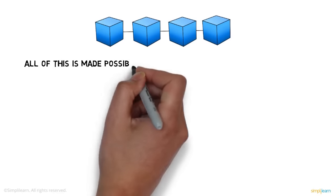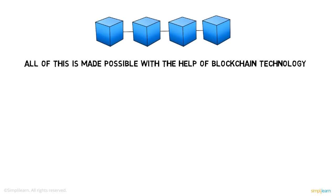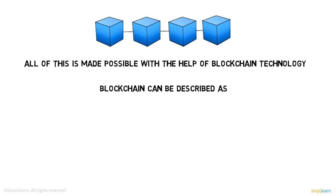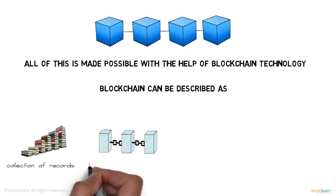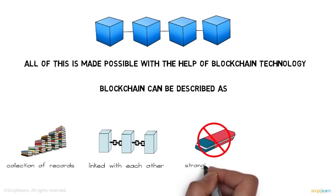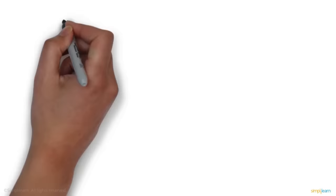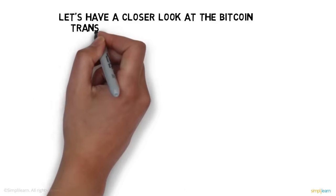Each user has a copy of the ledger, and the data within the blocks is encrypted by complex algorithms. Blockchain technology can be described as a collection of records linked with each other, strongly resistant to alteration, and protected using cryptography.